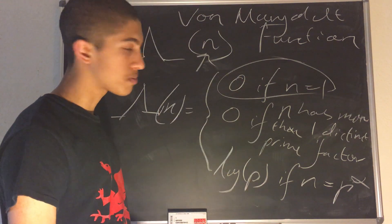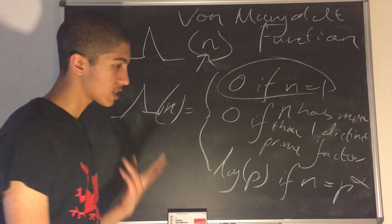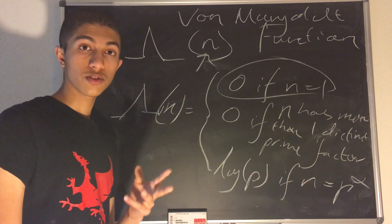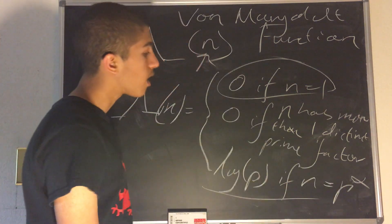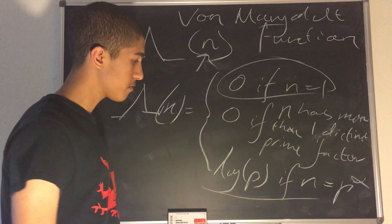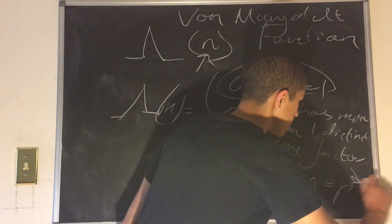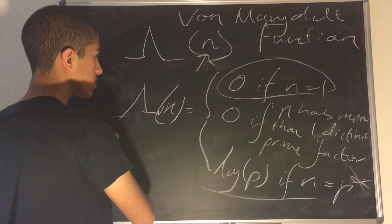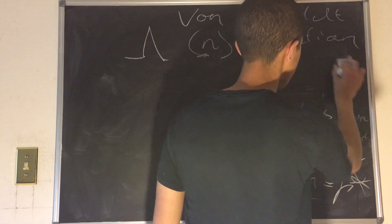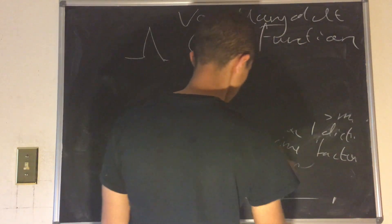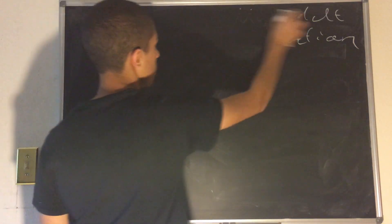So this is pretty intuitive. For example, Λ(6) = 0 because 6 has two distinct prime factors: 2 and 3. And the last case — log(p) if n = p^α — is fairly intuitive as well. You just strip the exponent α and take log of the prime. So this is Λ(n), the von Mangoldt function, and we'll see why it is so useful in the next arithmetic function and the following videos.